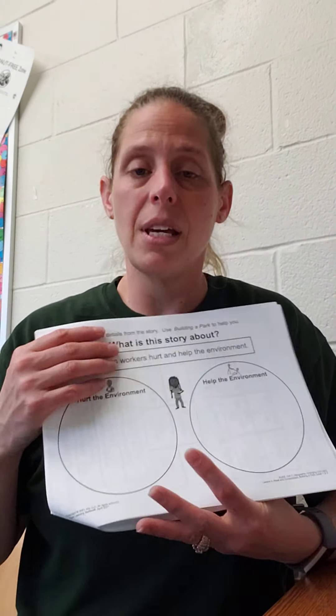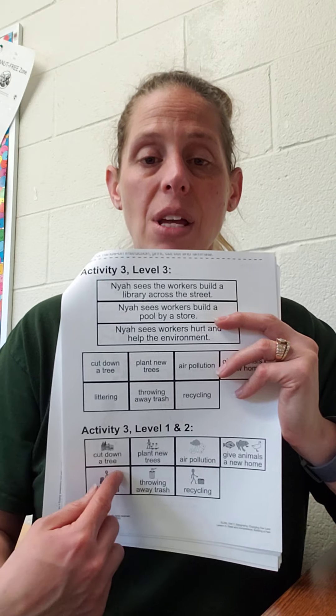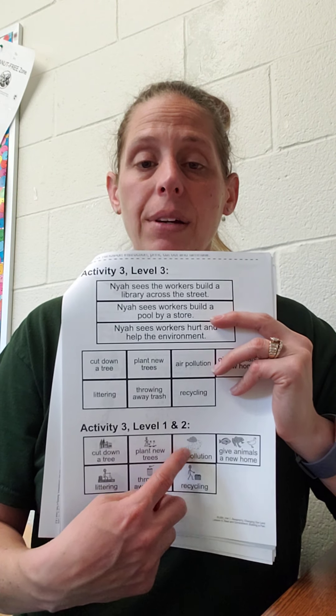The next page is another sort. We are sorting between things that hurt the environment and things that help our environment. The page behind it — you always want to try and use the ones with the pictures right now. Cut these out and have them ready to go. You're going to say, for example, we throw away our trash — that helps the environment — so we're going to have them put it in the 'helps' circle.